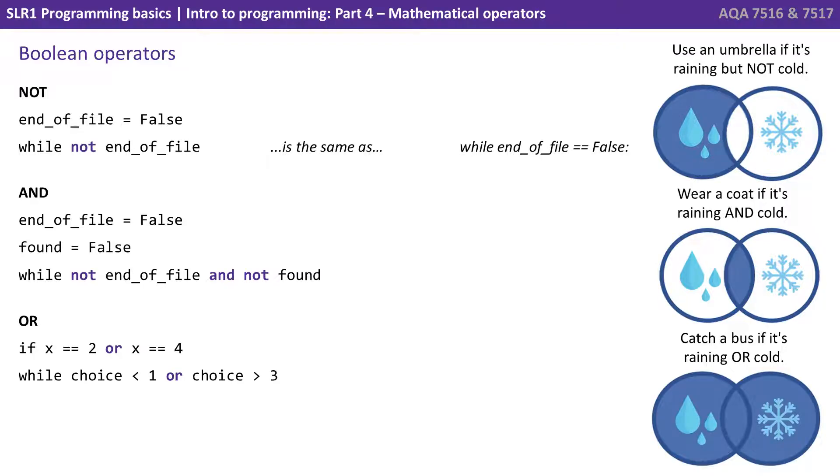We have the or operator, catch a bus if it's raining or it's cold, so if x equals 2 or x equals 4, while choice is less than 1 or choice is less than 3. These are three basic boolean operators you're coming up against again and again in computer science and programming.